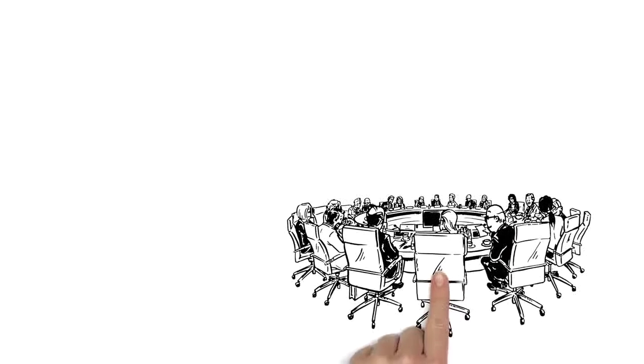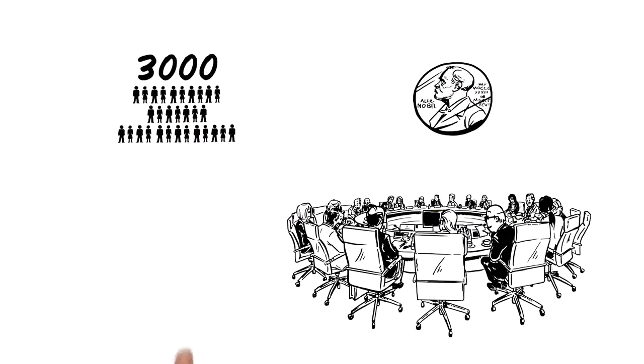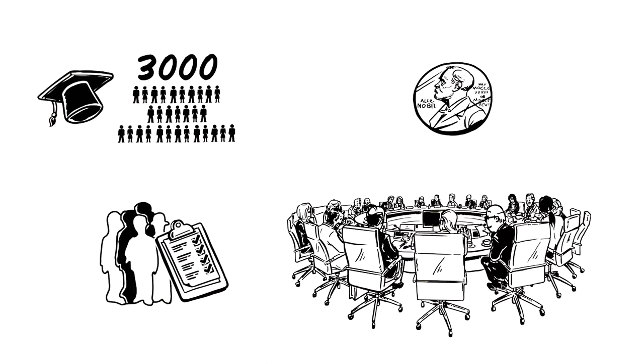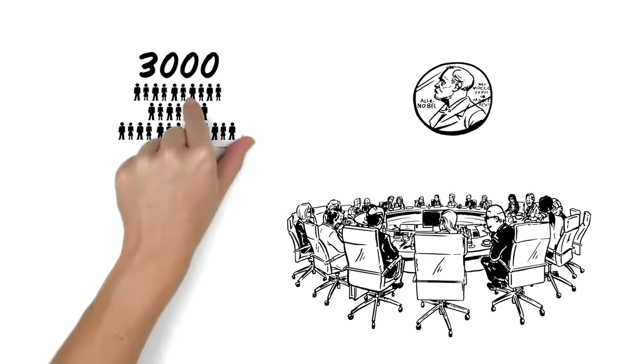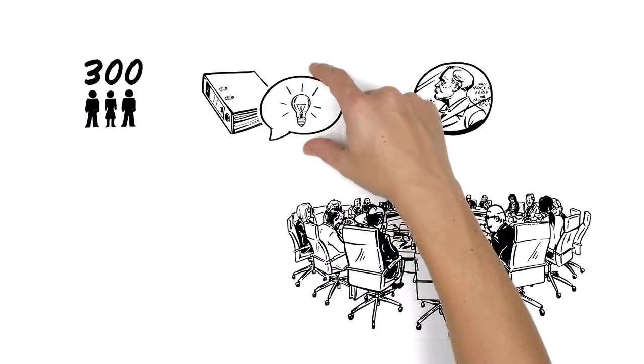A separate committee awards each prize, but the processes are similar. About 3,000 people, usually academics, have the right to nominate candidates. From these, the Nobel committees choose around 300 potential recipients and prepare a report reflecting the advice of experts. The prize awarding institutions then select the laureates by a majority vote.